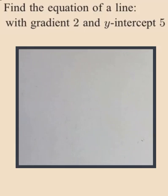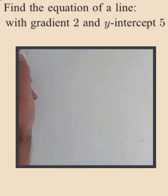Find the equation of a line with gradient 2 and y-intercept 5. This is a very simple, generous question. You know that the general equation of a straight line — the gradient-intercept form of the equation of a straight line —